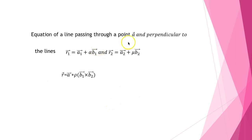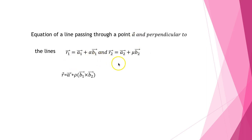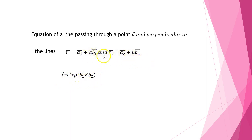The equation of a line passing through a point A and perpendicular to two lines r1 = a1 + α·b1 and r2 = a2 + μ·b2 is given by r = a + ρ(b1 × b2). So we take the cross product of b1 and b2.